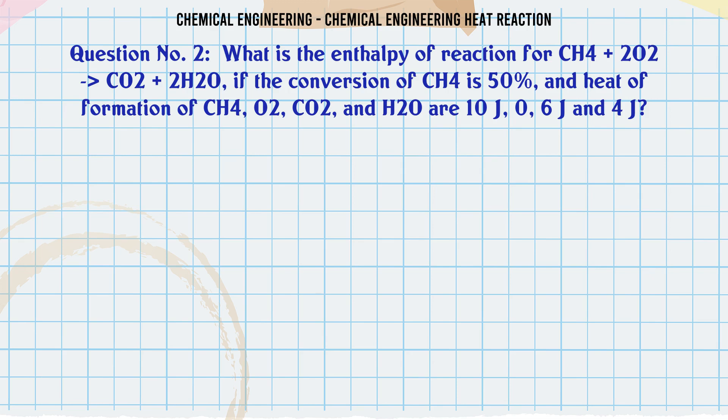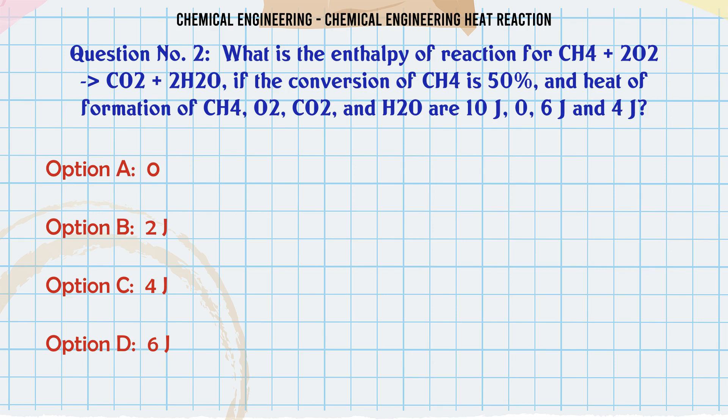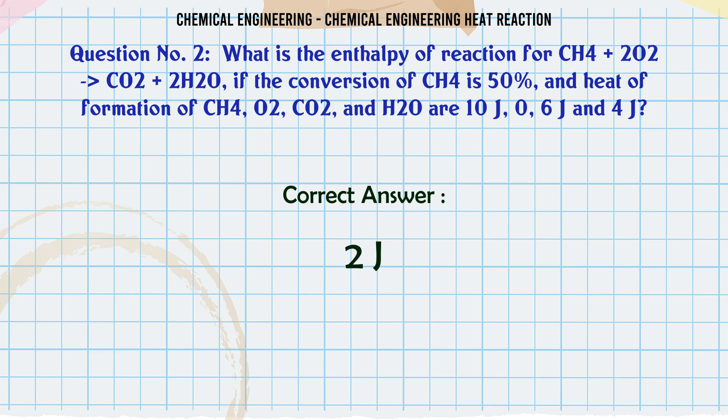What is the enthalpy of reaction for CH4 + O2 → CO2 + H2O if the conversion of CH4 is 50% and heat of formation of CH4, O2, CO2, and H2O are 10J, 0, 6J, and 4J? A: 0, B: 2J, C: 4J, D: 6J. The correct answer is 2J.